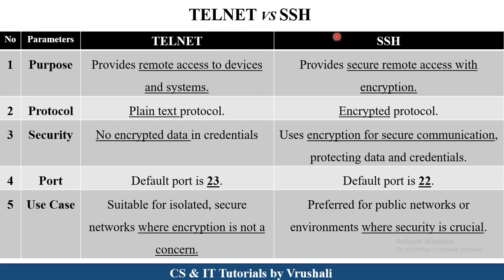Now let's see the difference between Telnet and SSH protocol. Both protocols provide remote access permissions — you can access another computer on the network. However, SSH provides more security and more encrypted data compared to Telnet. In Telnet, the password is sent as plain text, but in SSH the password is converted to encrypted format using private key and public key cryptography. Telnet uses port number 23 and SSH uses port number 22.